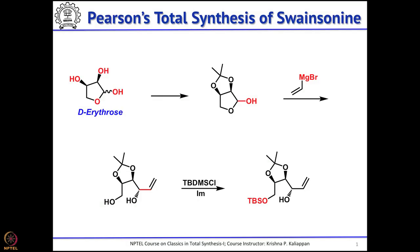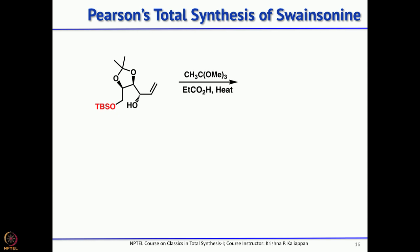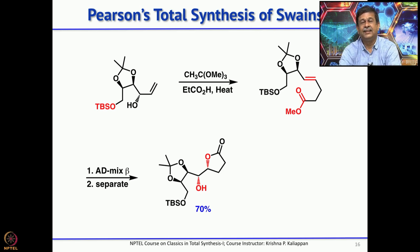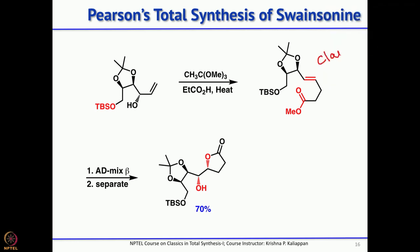They started with D-erythrose, directly protected it with acetone to get the acetonide, then treated with vinyl magnesium bromide to give the corresponding diol. The primary alcohol of the diol was selectively protected as a TBS ether using TBDMSCl and imidazole. The allylic alcohol on treatment with trimethyl orthoacetate in the presence of a catalytic amount of propionic acid undergoes a Johnson-Claisen rearrangement to give the gamma-delta unsaturated ester.